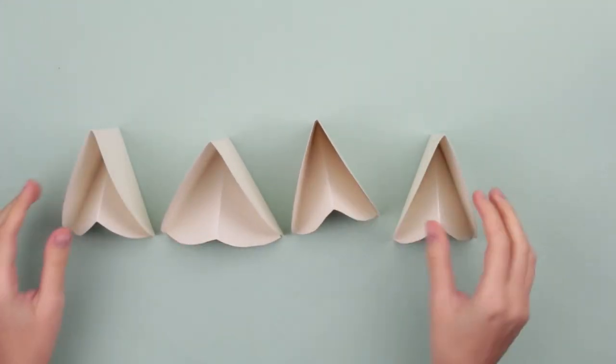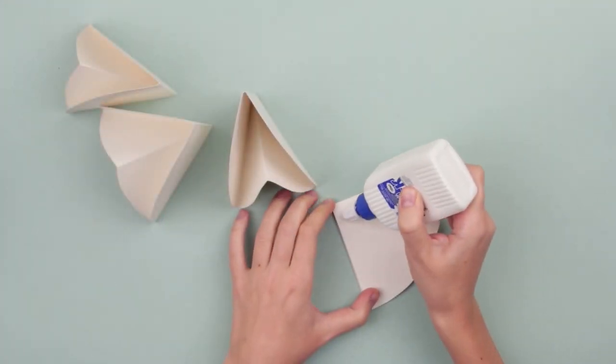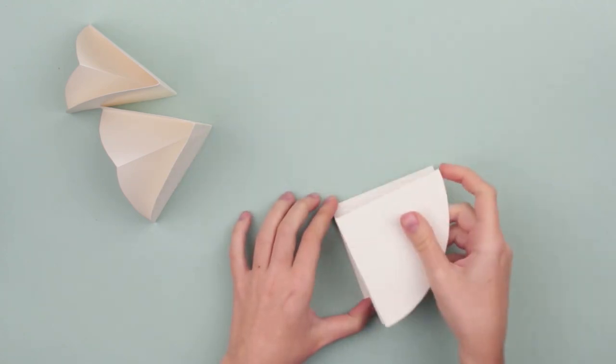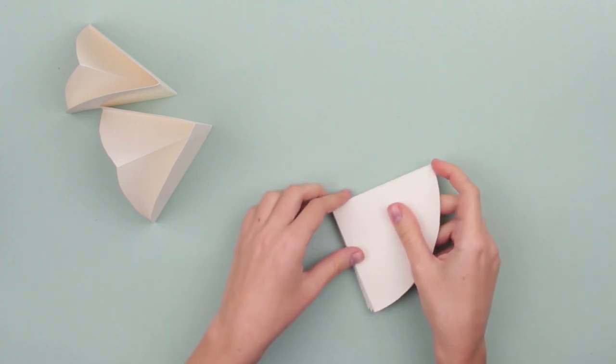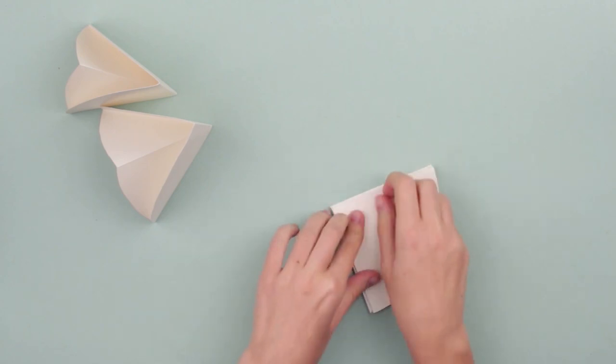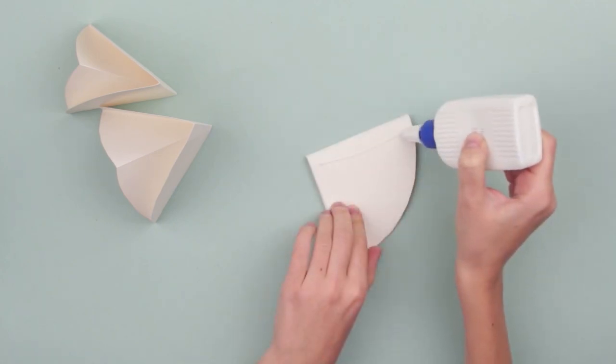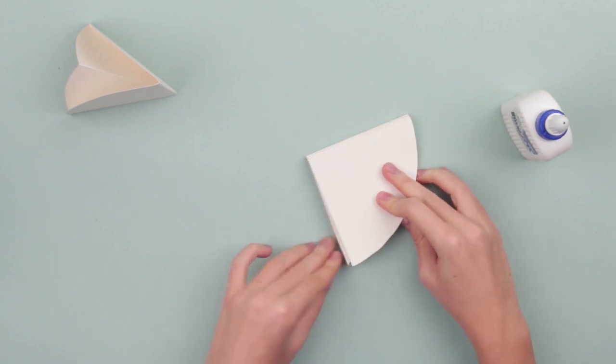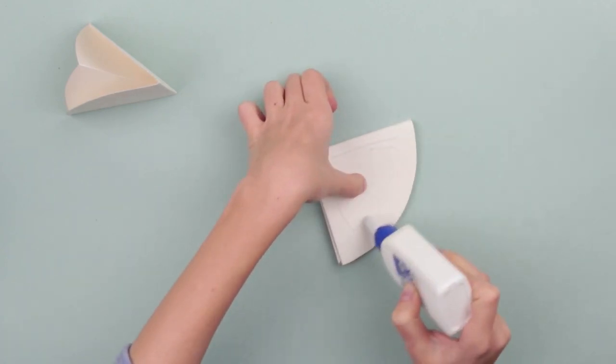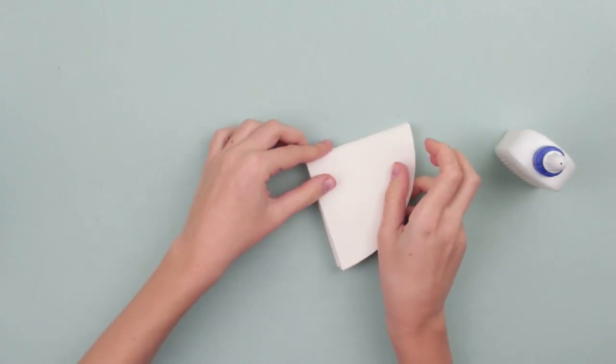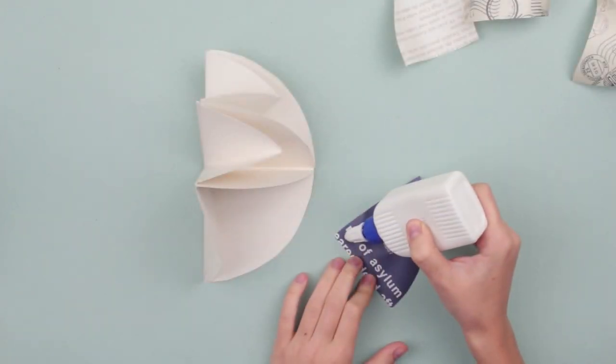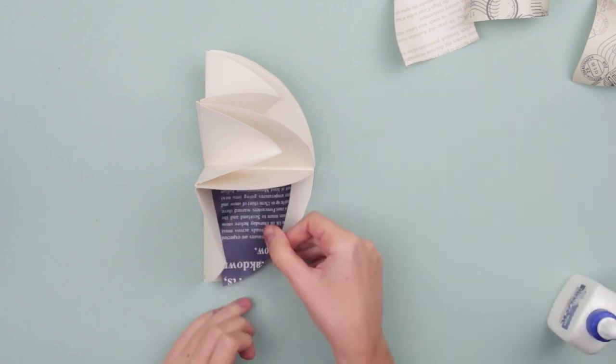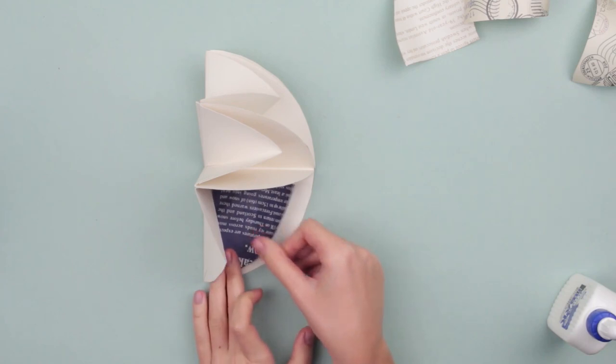We have 4 of the same details. Now we should put them together. Add white glue to one element. Place the second one on top. And press down. Add the glue over the surface and attach the next one. And the last one. Decorate the album. Attach the cut details to the walls inside. Embellish each division. You can glue pictures here later on.